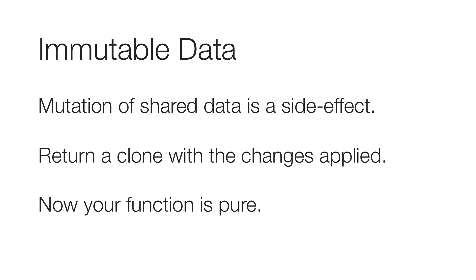Immutable data — if you've worked with React, I'm sure you've heard the term. The point is that any function should not mutate the data that is handed to it. In a web application, you may have multiple components rendered into the DOM which have references to the same underlying object. If one component calls a function and passes that data structure into it and it gets mutated, then the other component is going to have a mutated state — and that's probably not what you want.